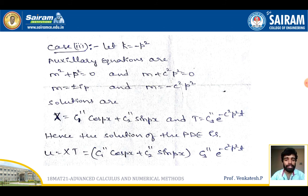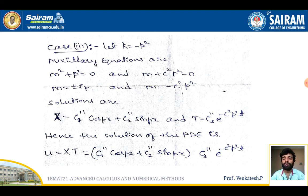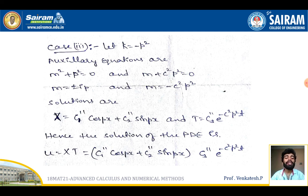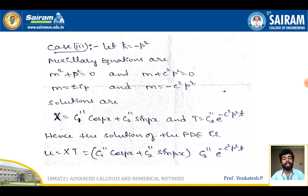Case 3: k = −p². The auxiliary equation for X: m² + p² = 0, giving m = ±ip, so X = c₁cos(px) + c₂sin(px). For T: m + c²p² = 0, so m = −c²p², giving T = c₃e^(−c²p²t). Therefore u = (c₁cos(px) + c₂sin(px)) · c₃e^(−c²p²t). These are the various possible solutions of the one-dimensional heat equation.